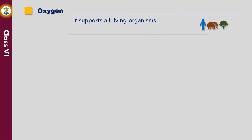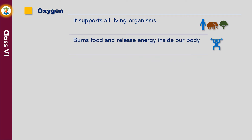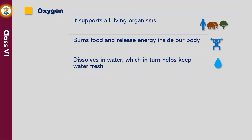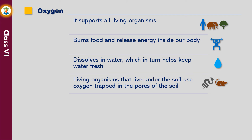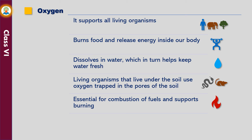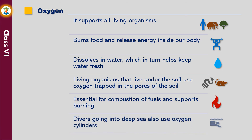Oxygen supports humans, animals and plants on the Earth as all living organisms need oxygen for respiration. Oxygen burns food and releases energy inside our body. It dissolves in water, which in turn helps keep water fresh and is a source of respiration for aquatic plants and animals. Living organisms that live under the soil, such as snakes, rats, beetles and earthworms, use oxygen trapped in the pores of the soil. It is also essential for combustion of fuels and supports burning. Divers going into the deep sea also use oxygen cylinders.